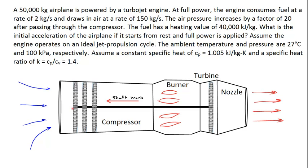In this problem we've got a 50,000 kilogram airplane powered by a turbojet engine. The engine draws in fuel at 2 kilograms per second and air at 150 kilograms per second. As the air passes through the compressor, the pressure is increased by a factor of 20. The fuel has a heating value of 40,000 kilojoules per kilogram. We're asked for the initial acceleration of the airplane starting from rest with full power applied, assuming an ideal jet propulsion cycle, ambient conditions of 27°C and 100 kPa, constant specific heats for air, and a heat capacity ratio of 1.4.